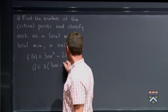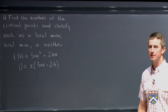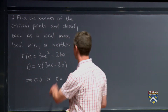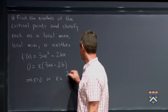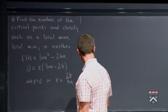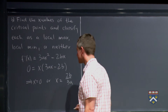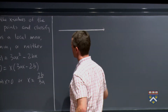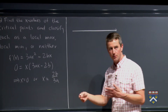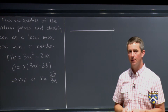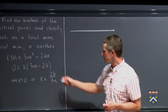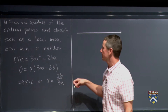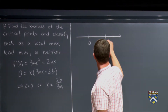We factor an x out of f'(x) = 3ax² minus 2bx to get x(3ax minus 2b) = 0. So either x = 0 or x = 2b over 3a. Now, to decide if we have maxima, minima, or neither, we draw a number line. We need to decide whether 2b over 3a is to the left or right of zero. Since both a and b are positive, the top is positive, the bottom is positive, so the whole thing is positive. So zero is on the left and 2b over 3a is to its right.